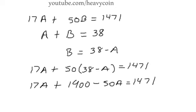We've got 17A minus 50A. So 17 minus 50 is going to be negative 33. So we've got 1900 minus 33A equals 1471.